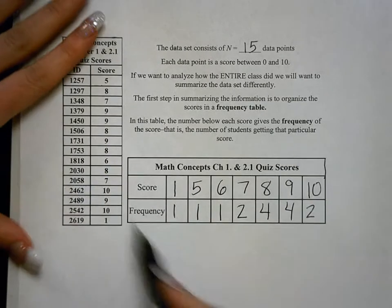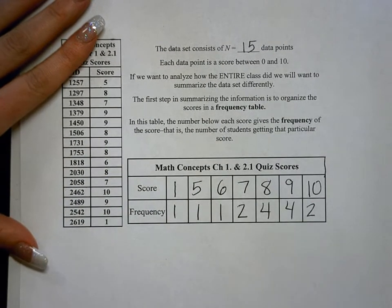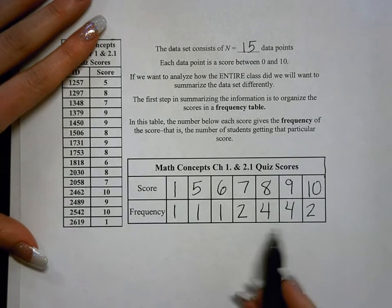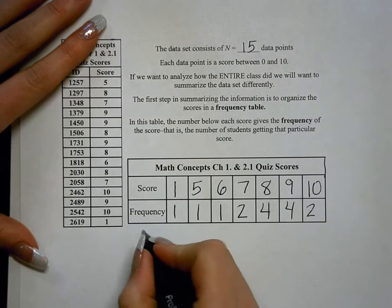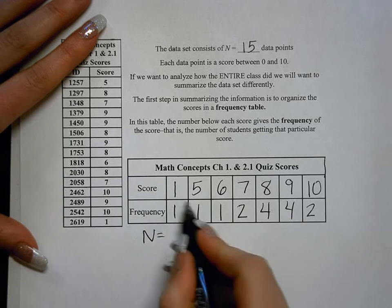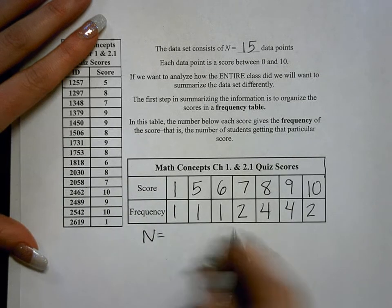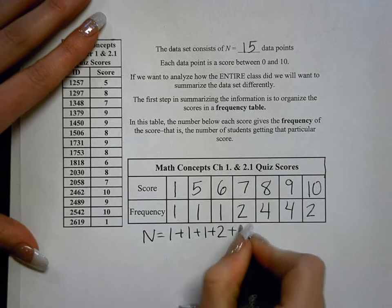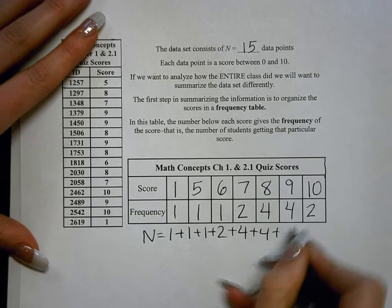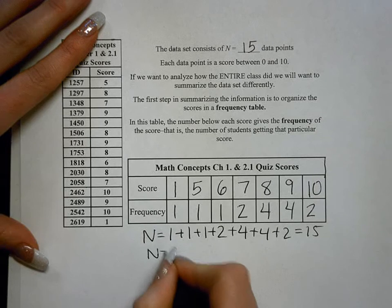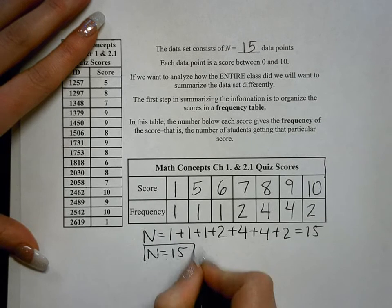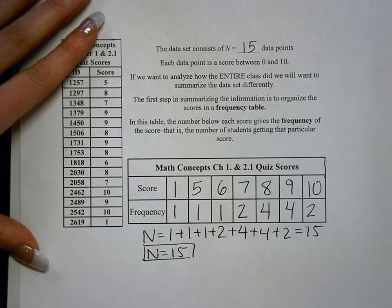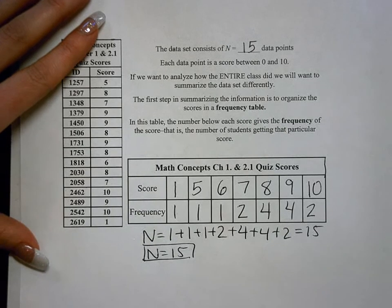Now if you're only given a frequency table and you need to figure out how many data points there are in this frequency table, then what you would do is n equals just all of the combined frequencies. So if you go 1 plus 1 plus 1 plus 2 plus 4 plus 4 plus 2, you will arrive at 15 and n equals 15. So if the n isn't given, that is how you figure out what n is.